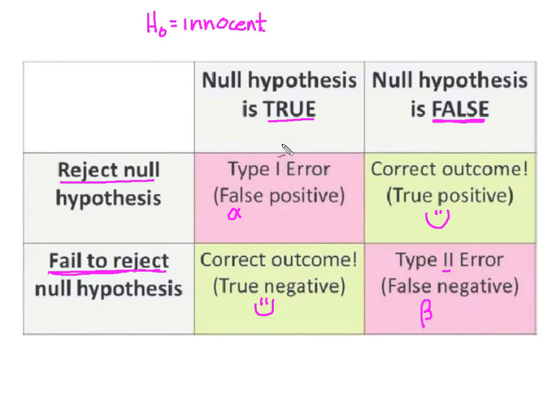What we can think of in a Type I error is we convicted an innocent person, and here we let a guilty person go.